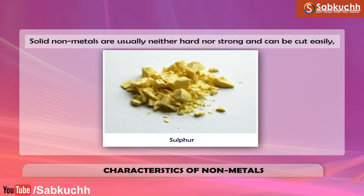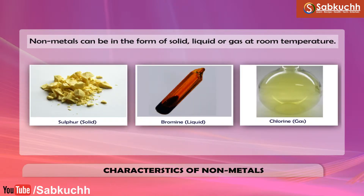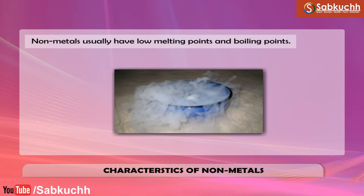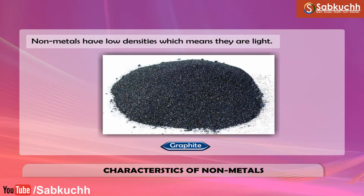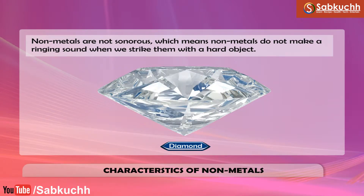Solid non-metals are usually neither hard nor strong and can be cut easily. Non-metals can be in the form of solid, liquid or gas at room temperature. Non-metals usually have low melting points and boiling points. Non-metals have low densities, which means they are light. Non-metals are not sonorous, which means non-metals do not make a ringing sound when we strike them with a hard object.